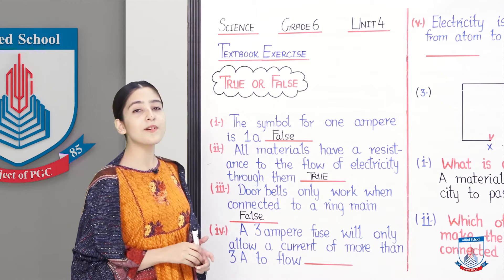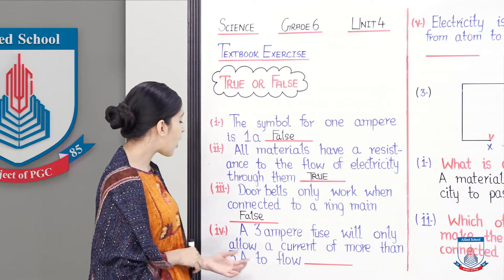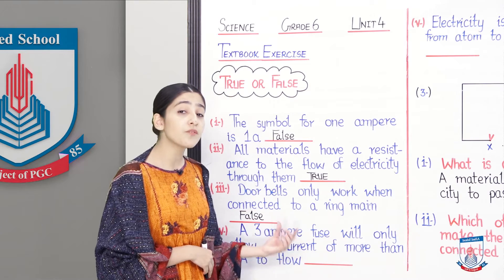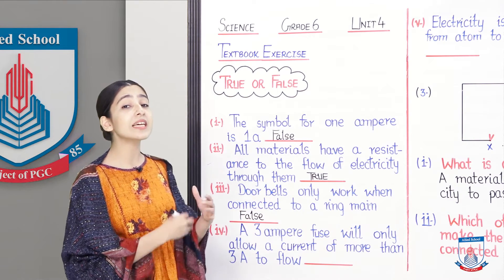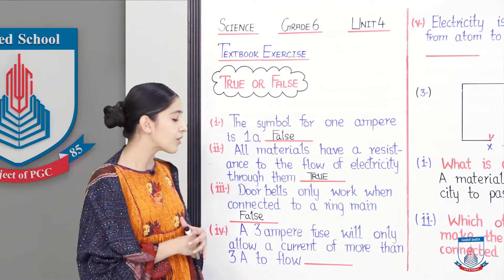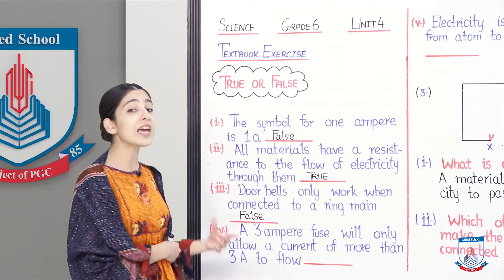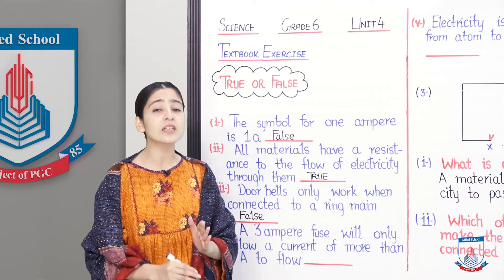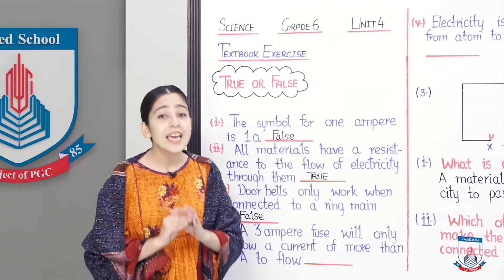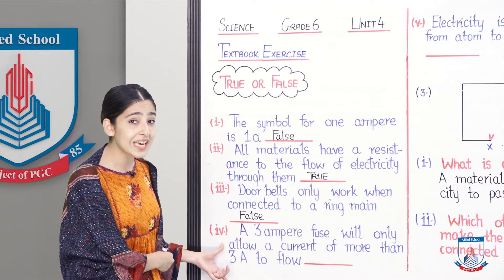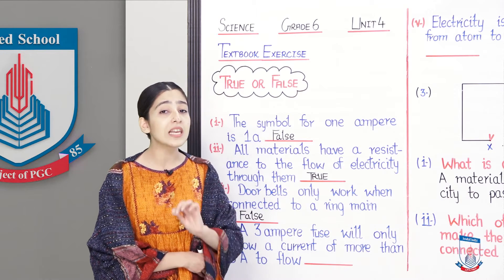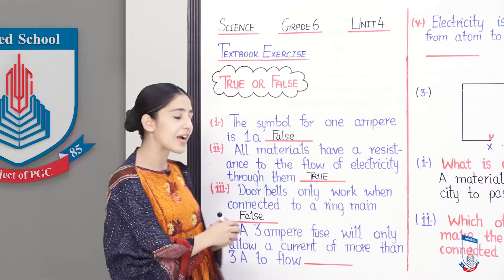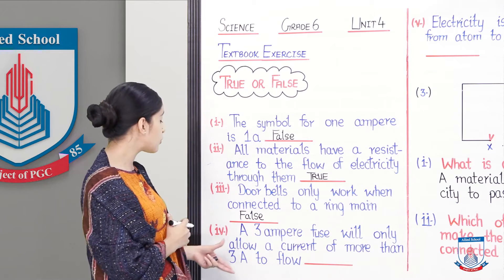Moving towards statement number four. A three ampere fuse will only allow a current of more than three ampere to flow through it. Agar hamare paas ek fuse hai aur woh hai sirf three ampere ka, toh woh apne andar se current ko allow karega of more than three ampere. Agar hamara fuse sirf three ampere ka hai, toh woh three ampere se zyada current apne andar se flow nahi hone dega. A fuse of three ampere will only allow the current of three ampere to pass through it. So you will write false as an answer to statement number four.